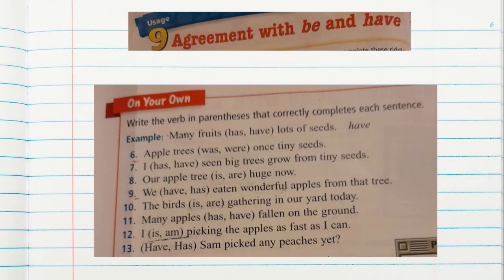Let's continue with the next activity. Write the verb in parentheses that correctly completes each sentence. You will write these sentences in your notebook. Let's read the example: many fruits has/have lots of seeds. Underline the subject first — it's fruits. We know that fruits is plural. The form of the verb for plural is have. So: many fruits have lots of seeds.